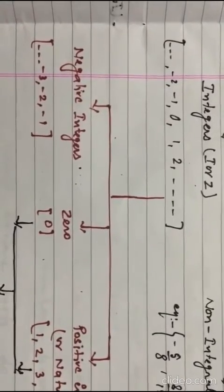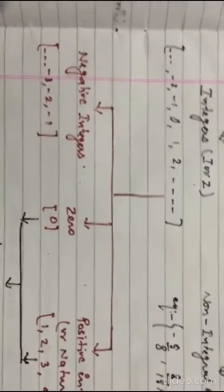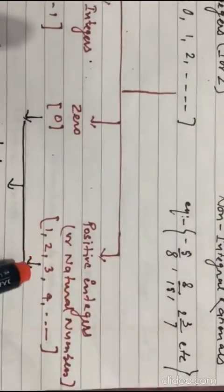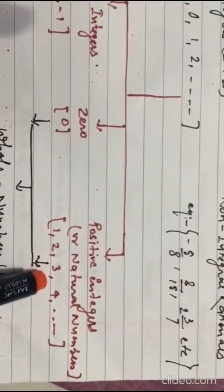So, negative integers: minus 1, minus 2, minus 3, up to minus infinity. And then 0. And positive integers, which are also called natural numbers: 1, 2, 3, 4, up to positive infinity.